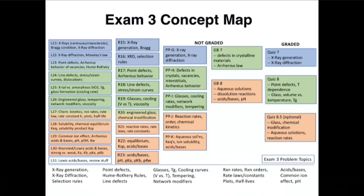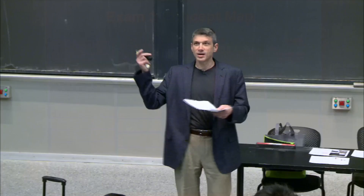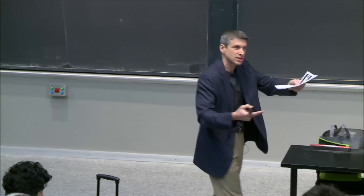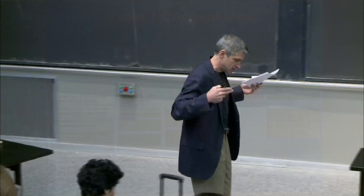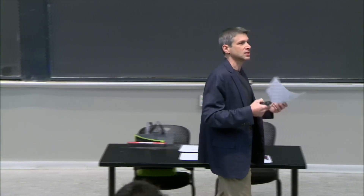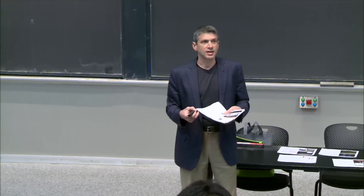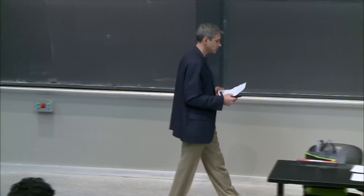Here's a concept map that I made for exam three. This helps you see the kinds of problems and topics we've covered and how it's all connected. Here are the quizzes — there's the optional one. You could still do it. If you want to do quiz 8.5 and get it graded, and if it's higher than your lowest quiz, we'll swap it in for that, and you still get to drop one. Please hand it in by tomorrow's recitation. There are the other two quizzes, and here are the problem sets and the goodie bags — all the kinds of problems and topics we want you to know about for Friday.